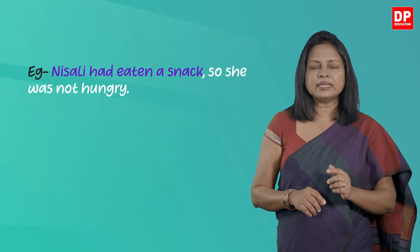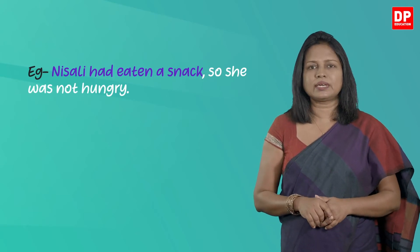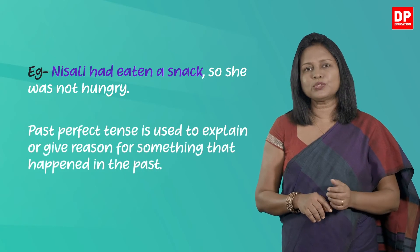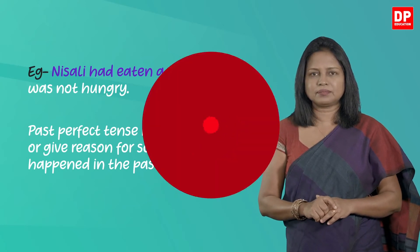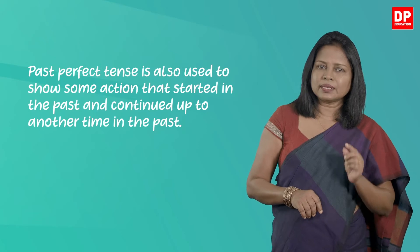There are many other situations in which we use past perfect tense. Look at this situation: 'Nissali had eaten a snack, so she was not hungry.' Here, past perfect tense is used to explain or give a reason for something that happened in the past. Nissali was not hungry because of an action which happened earlier — she had eaten a snack. So to explain the reason for something that happened in the past, we can use past perfect tense.